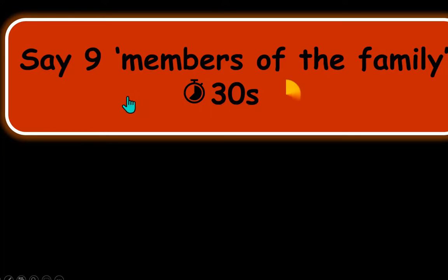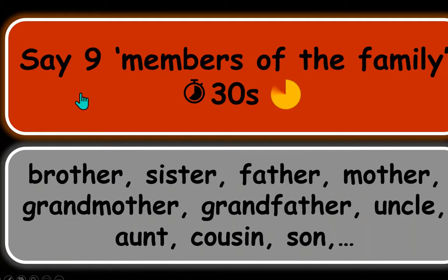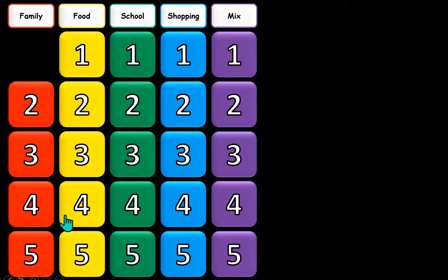You would say mom, dad, uncle, aunt, brother, sister, cousin — and son and daughter maybe — that's nine. Then you click on the red slide to get the answer. You can't click on the images; try and find the right slide, and it gives the answer.